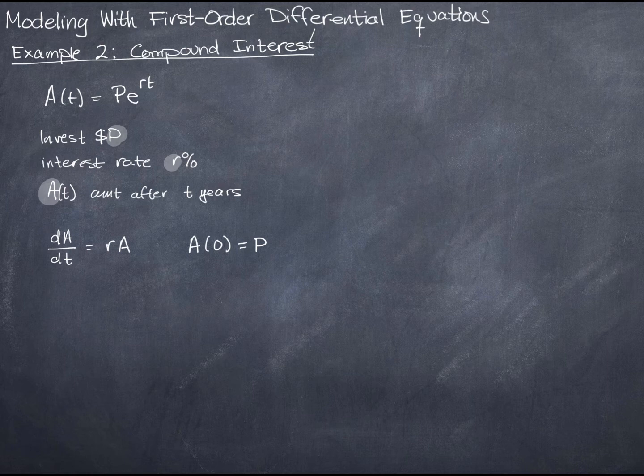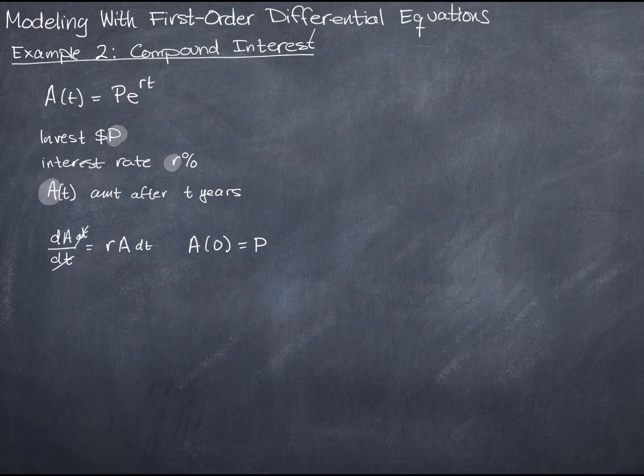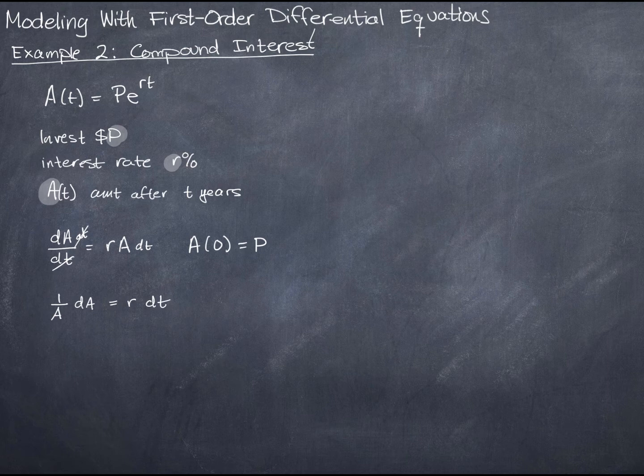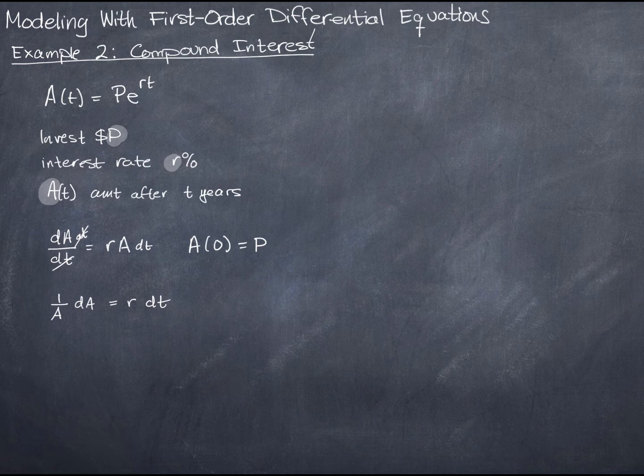I will multiply both sides by dt, which cancels it on that side. And then I'll also divide both sides by A. So I have 1 over A, dA equals r dt. Now, it's worth taking a moment and thinking about what each of these letters mean. t means time. We've established that that's going to be in years. A means amount.